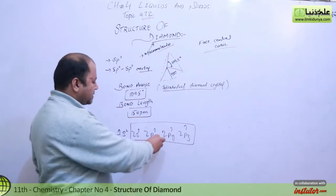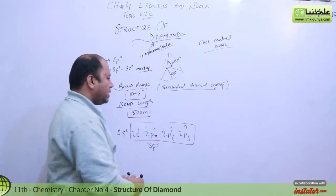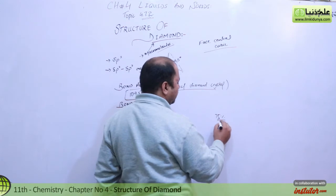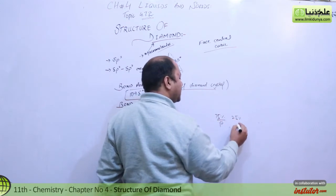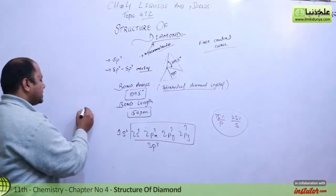In sp3 hybridization, one s and three p orbitals mix together and become sp3. In sp3, you can say that 75% character is from p orbitals and 25% character is from s orbitals.